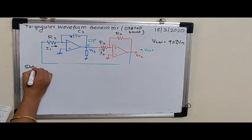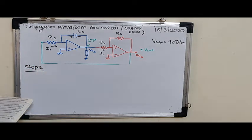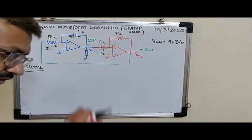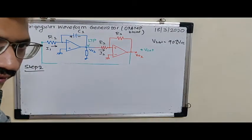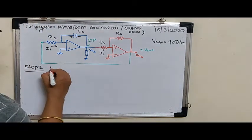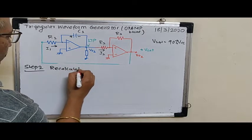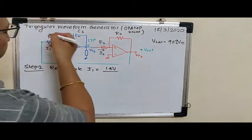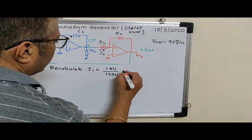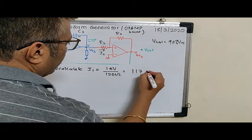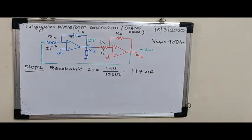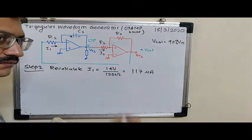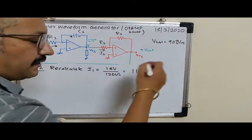Now since we have already taken a different value than the calculated value, we may have to recalculate the value of I1. So recalculate I1 which happens to be 14 volts divided by the selected value of resistor, that is 120 kΩ, which turns out to be 107 microamperes. Just to verify that this is larger quantity than IBmax.